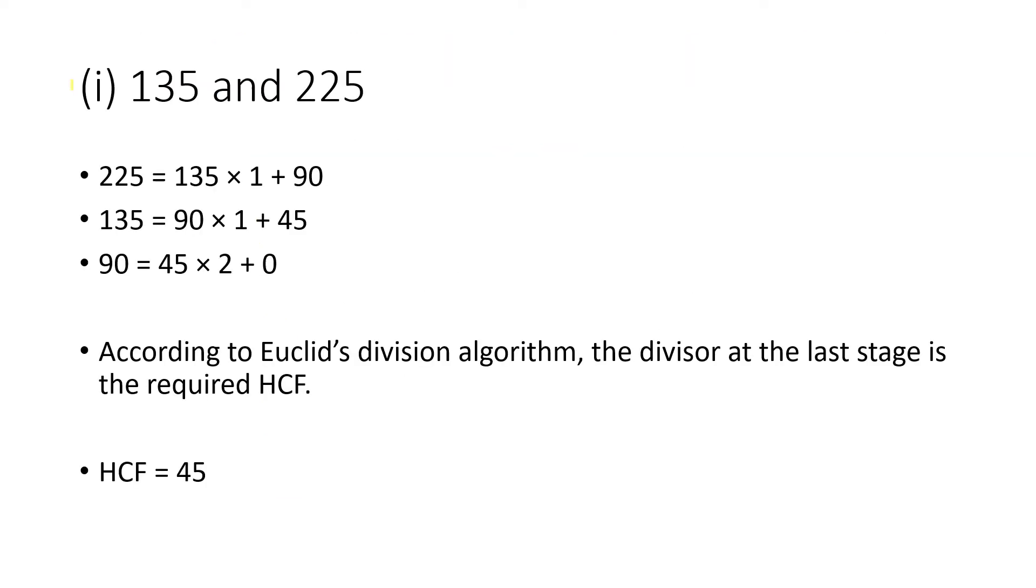First we have to find the HCF of 135 and 225. Using Euclid's division algorithm: 225 equals 135 multiplied by 1 plus 90, 135 equals 90 multiplied by 1 plus 45, and 90 equals 45 multiplied by 2 plus 0.